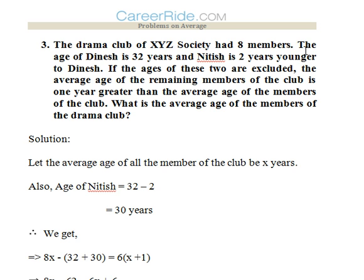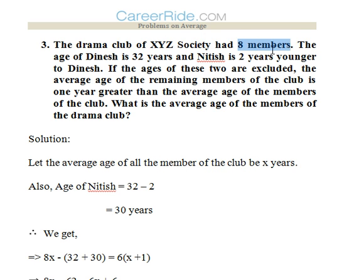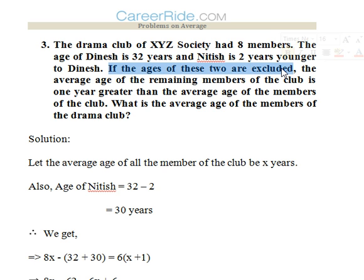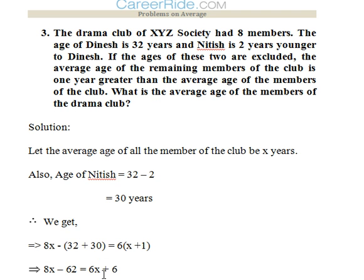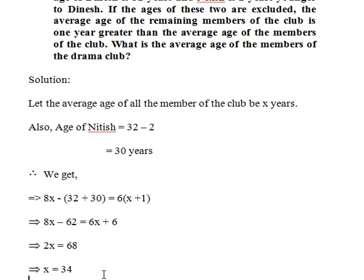The age of Dinesh is 32 and Nitish is 2 years younger, so age of Nitish is 30 years. We don't know the average, so we assume it to be X years. With 8 members, total age would be 8X. Excluding these two: 8X minus (32 + 30) equals (X + 1) into 6, since the remaining average is 1 year greater than X. The equation becomes 8X minus 62 equals 6X plus 6, giving 2X equals 68, so X equals 34. The average age of the drama club members is 34 years.